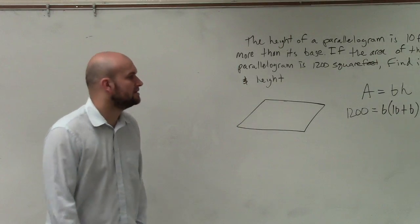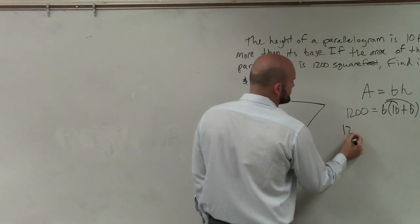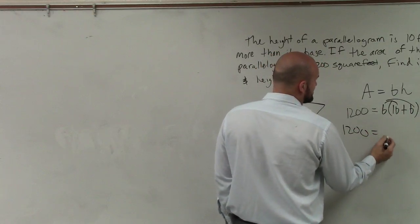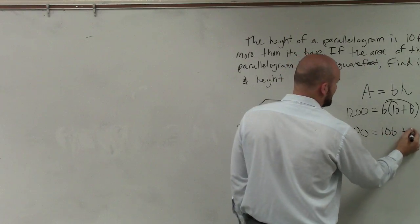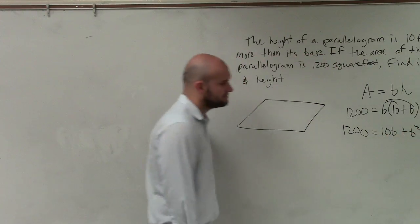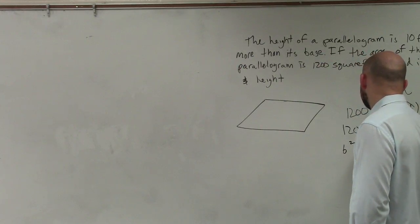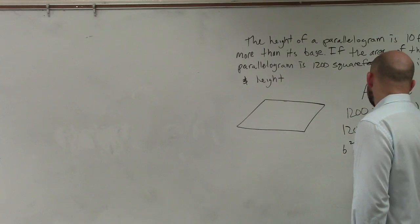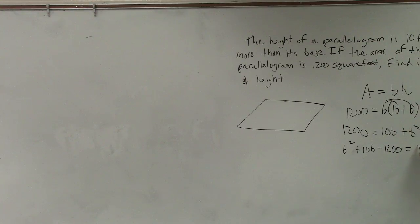Now what I have to do is use the distributive property. So I have 1200 equals 10b plus b squared. And then finally, what I have to do is set this equal to 0. So b squared plus 10b minus 1200 equals 0.